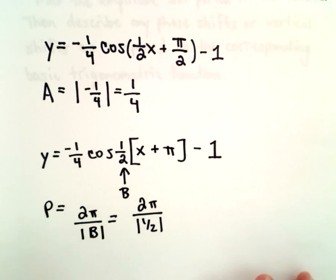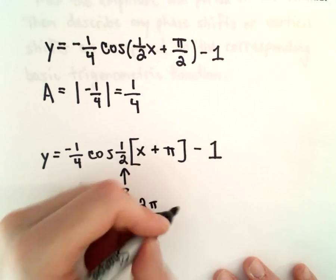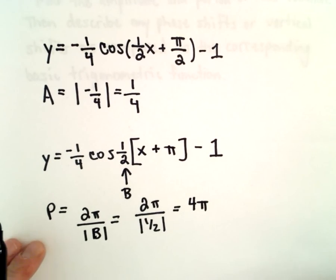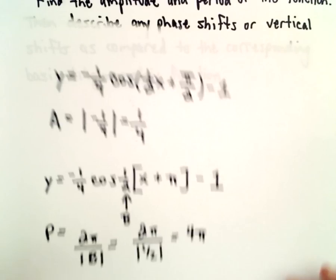Well, that is just one-half. Two pi divided by a half, that's going to give us four pi. Same thing as two pi multiplied by two. So there's the period and the amplitude.